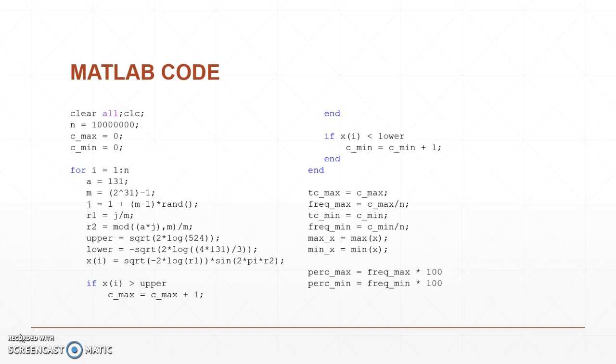We've already set our a, m, and j. Our a is 131 given from the problem, our m is 2 to the 31st minus 1, and our j is 1 plus m minus 1 times a random number generator from MATLAB. Our r1 is given to us as j over m, and our r2 is given as a times j mod m over m.